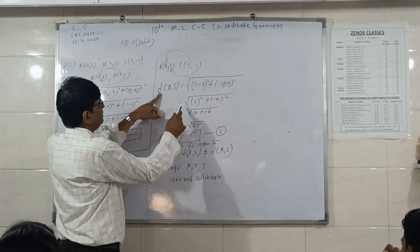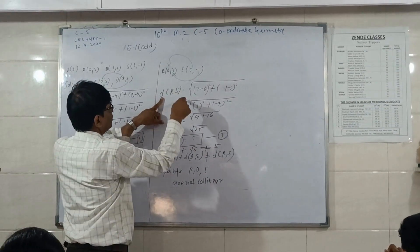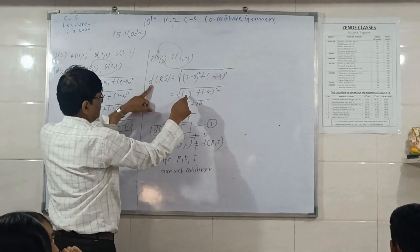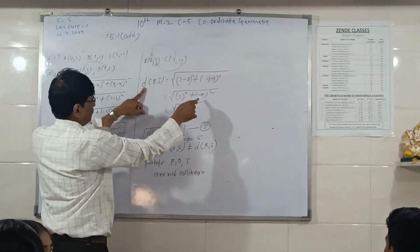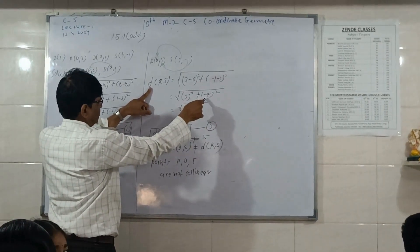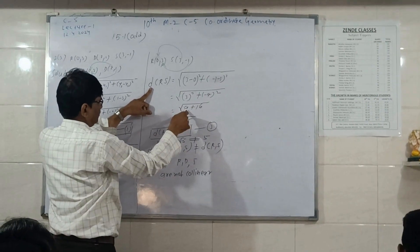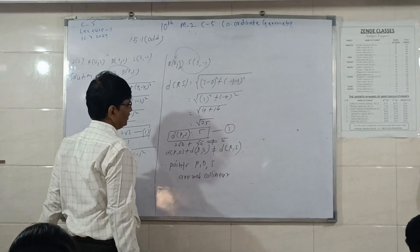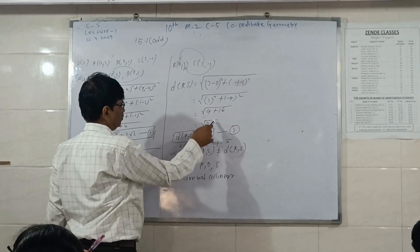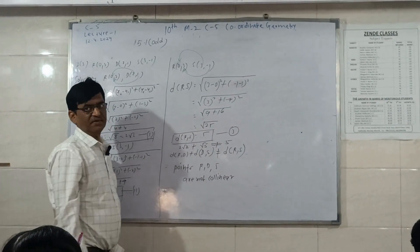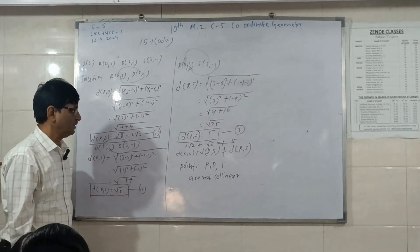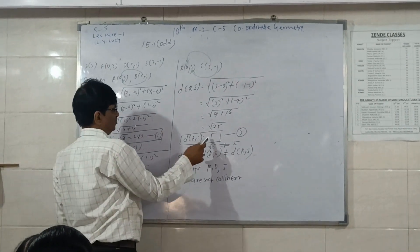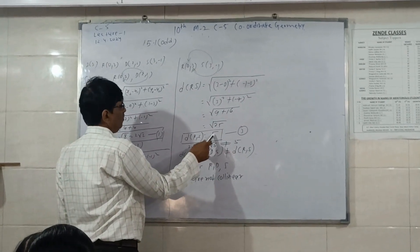The distance RS added: 3 minus 0, minus 1 minus 3. 3 squared plus minus 4 squared. 9 plus 16 equals root 20. So root 20. Distance RS is equal to 2 root 5. So distance RS is equal to 2 root 5.